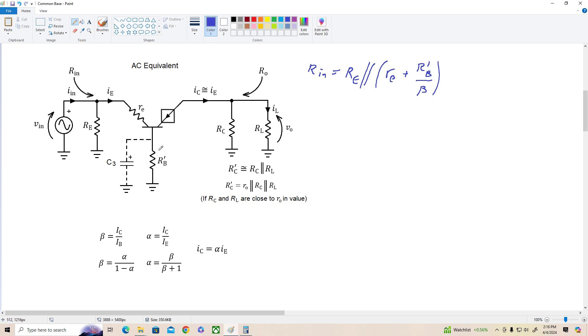If we put a capacitor in there, the external base resistor is zero, this term goes away, and we would get Rn equals Re in parallel with little re. That's simplified version.